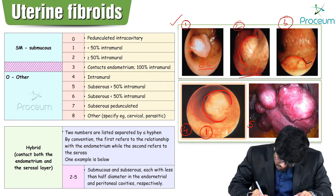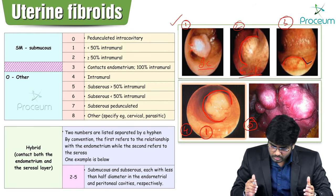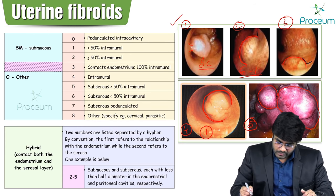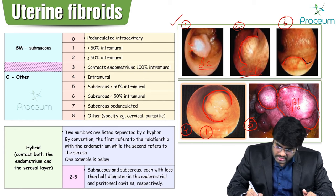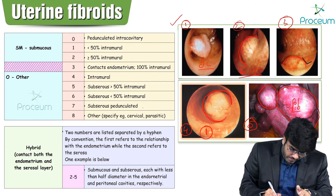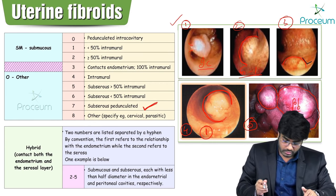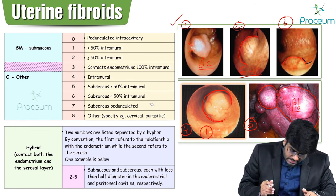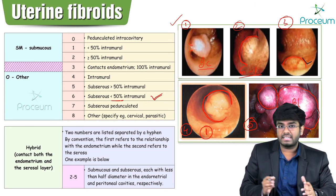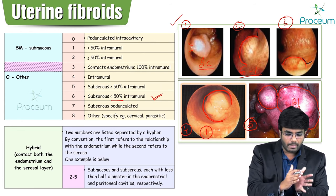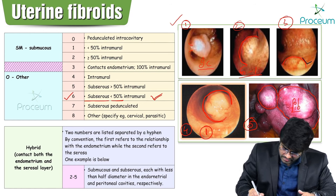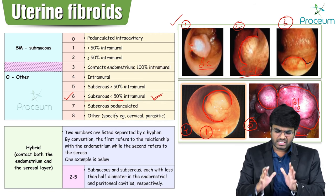Image 5 is a laparoscopic image showing outgrowths from the uterus coming out into the pelvic cavity. These subserosal fibroids are not pedunculated and have less than 50% intramural with the larger portion in the pelvic cavity — making them type 6 (grade 6) fibroids.